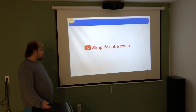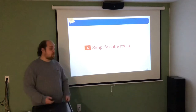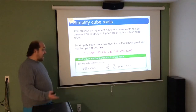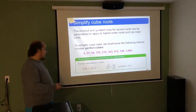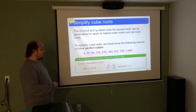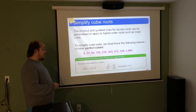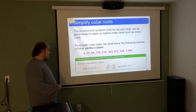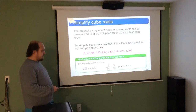When simplifying cube roots, we use the same general methods, but we need 3 of something under the root for one to come out. Having a list of perfect cubes in your notes will make these much easier. The perfect cubes are 8, 27, 64, 125, 216, 343, 512, 729, 1000, corresponding to 2 through 10. For any real numbers A and B, the cube root of A times B equals the cube root of A times the cube root of B, and similarly for fractions.